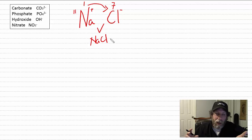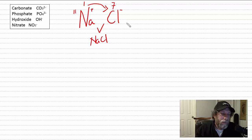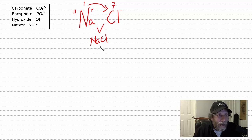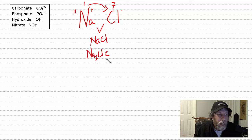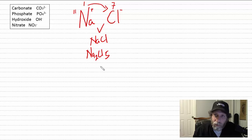That opposite charge attracts them together and they become an ionic compound — sodium chloride — held together by an ionic bond, which is the electrostatic attraction between positive and negative ions. The question is: how do you write the correct formula? It's not Na₂Cl₅ or something arbitrary — how do you know what the formula is?